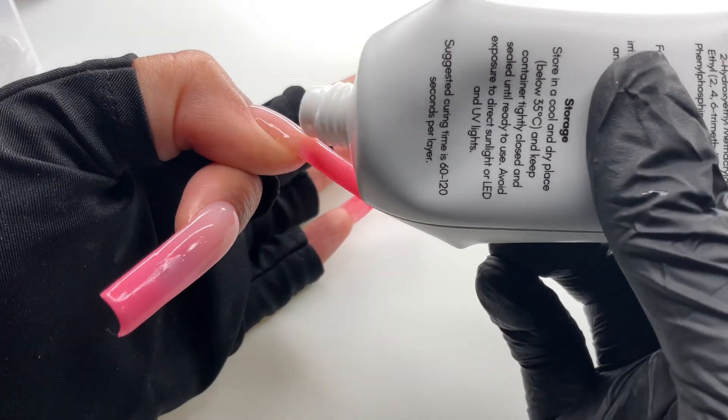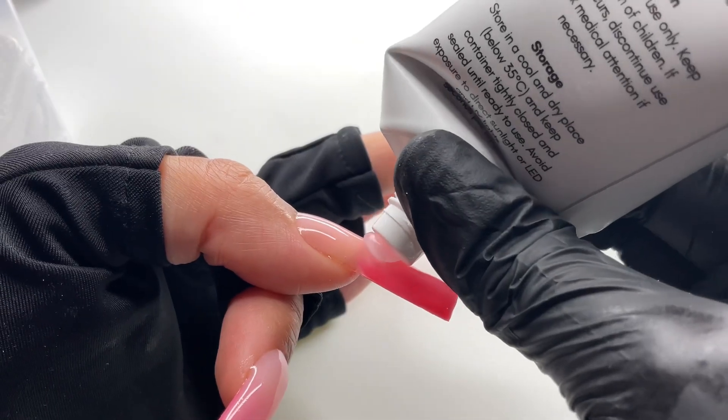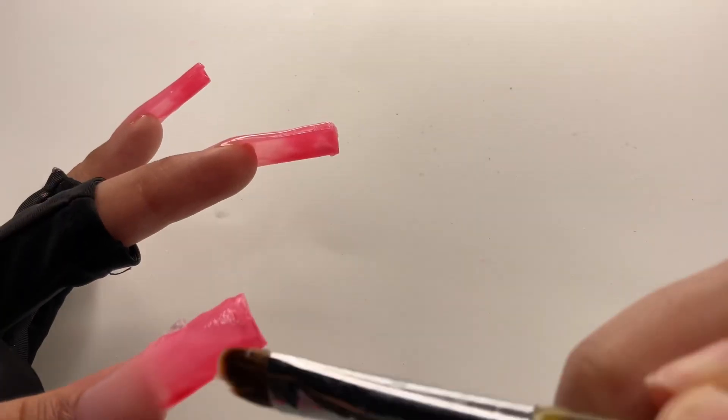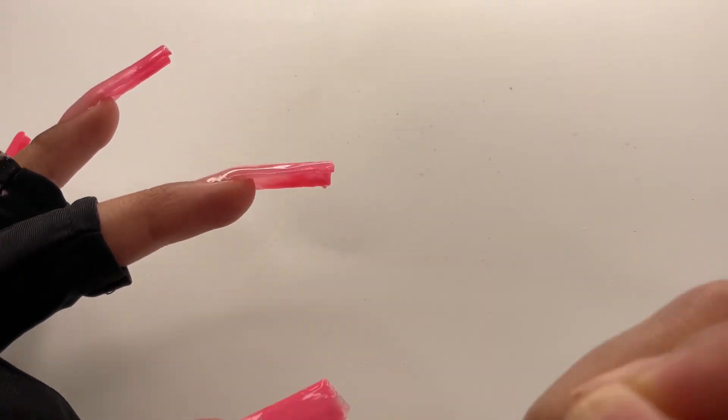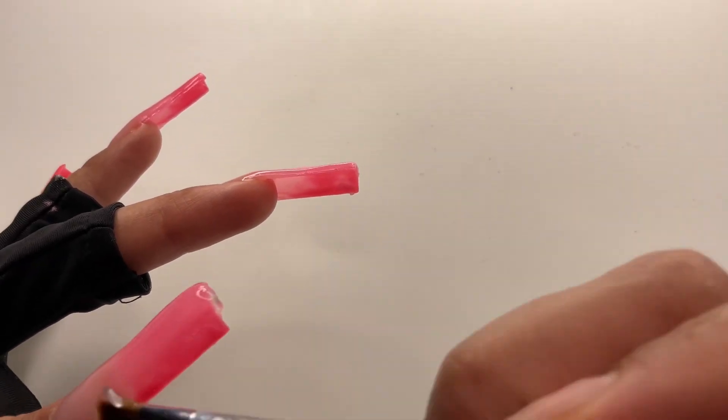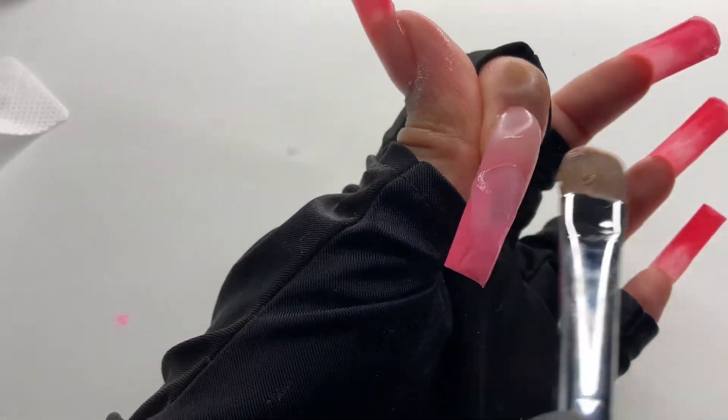There's a low area like I'm pointing here, so we're going to add a little bit more clear there. This is where clear is really great for just adding more structure beyond just encapsulating. I'm just filling in that low area with more clear polygel. Now it looks good to go.